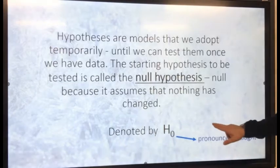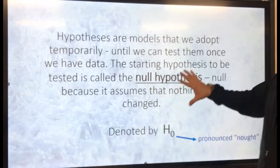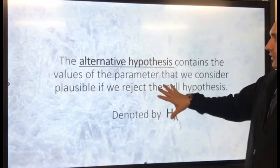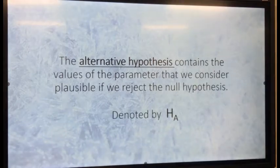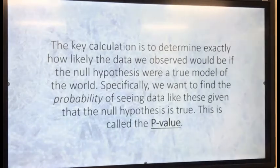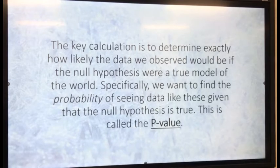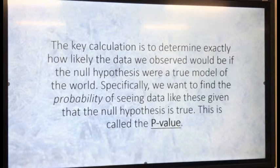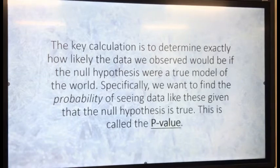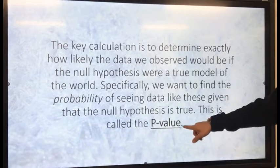So we have our null hypothesis — that's assuming nothing has changed — and the alternative represents a change or effect on that null. The key calculation is to determine exactly how likely the data we observe would be if the null hypothesis were a true model of the world. Specifically, we want to find the probability of seeing data like these given that the null hypothesis is true. This is called the p-value.